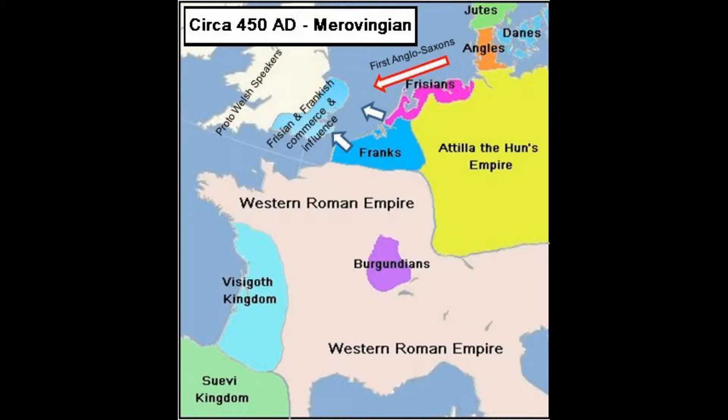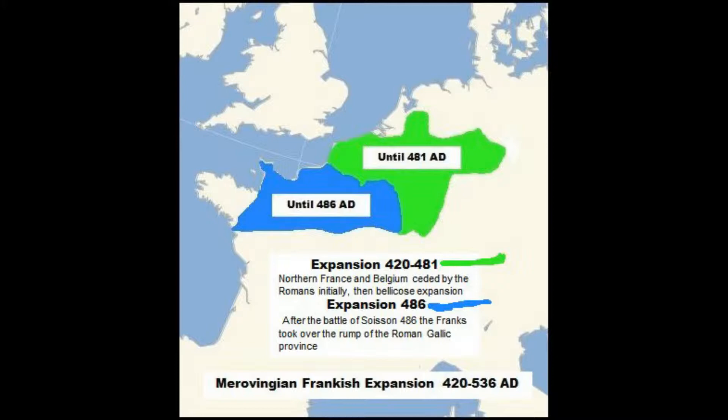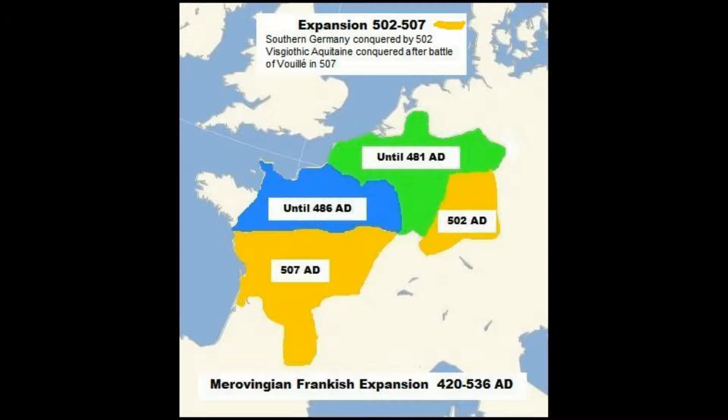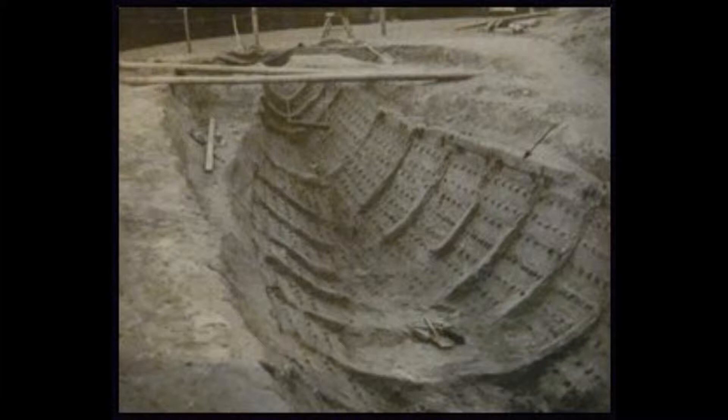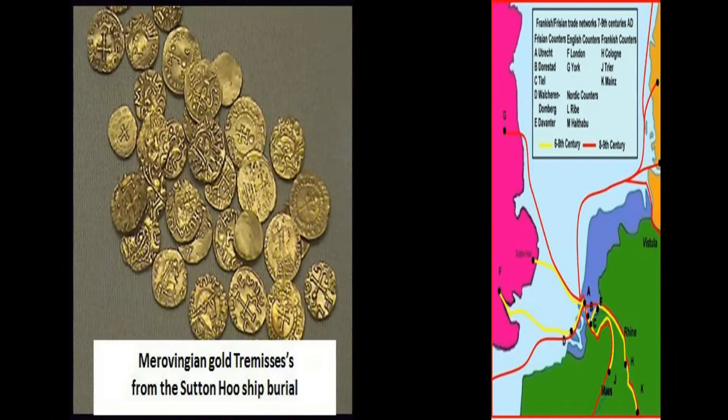The period of the 150 years following the Roman departure in 407 AD is particularly interesting. We look at the possibility that at one point in the Dark Ages the kings of some of these small English kingdoms actually owed allegiance to the Merovingian monarchs. To give an indication of the importance of Frankish-Frisian commerce with the Anglo-Saxon-led kingdoms in the early 7th century, we only have to look at the contents of the royal ship burial at Sutton Hoo, circa 625 AD.